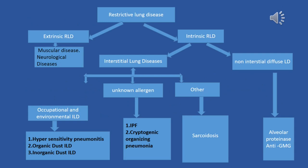Restrictive lung diseases can be divided into extrinsic and intrinsic restrictive lung diseases. Extrinsic causes are problems outside the lungs — neuromuscular causes like myasthenia gravis, Guillain-Barré syndrome, or diaphragmatic paralysis or pleural effusion. With intrinsic causes, the problem originates inside the lung, either within the alveoli or in between the alveoli.